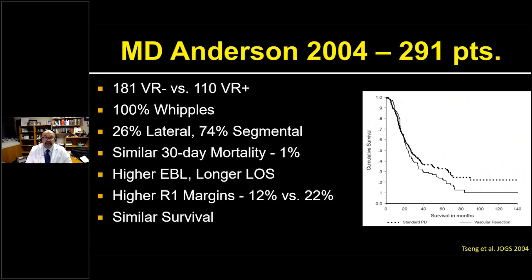Fifty years later, one of the largest series came out of Houston: 110 Whipple patients who underwent en-bloc venous resection, with a matched comparator of no venous resection. Three-quarters were segmental venous resections. They found a similar 30-day mortality but higher blood loss, longer length of stay, and higher R1 margin rates despite the venous resection. No statistical difference in survival between venous resection and no resection was found.